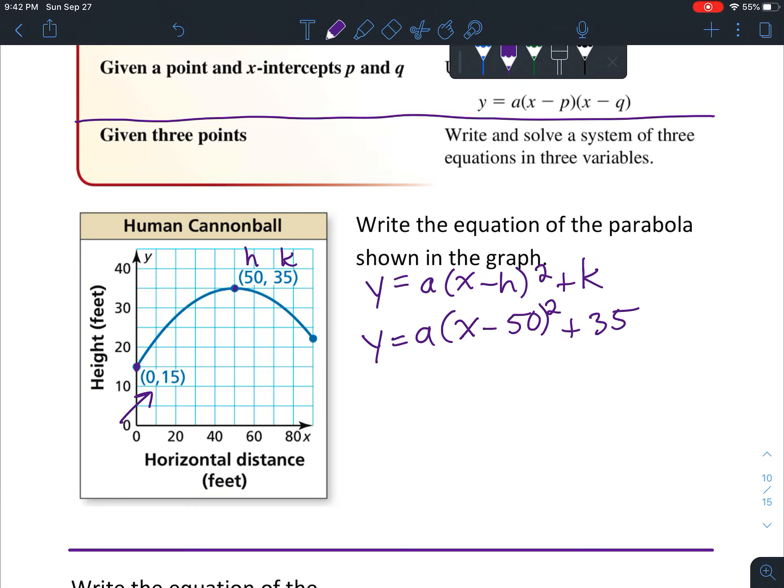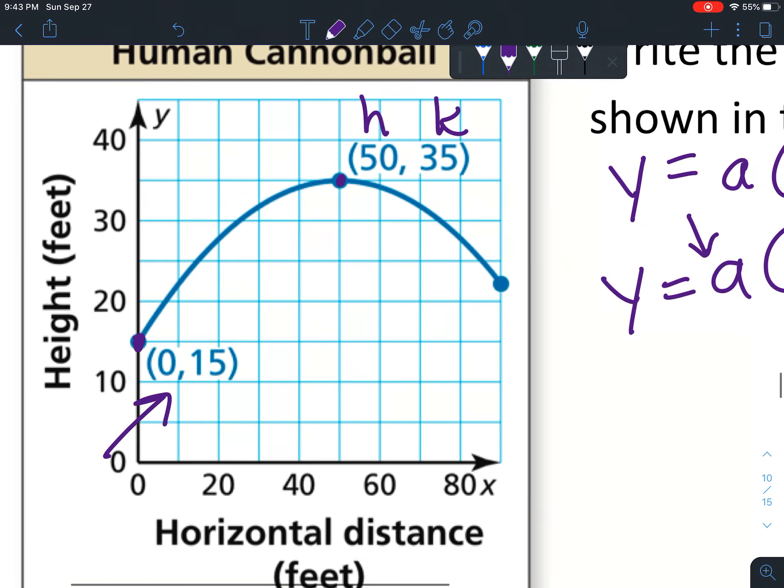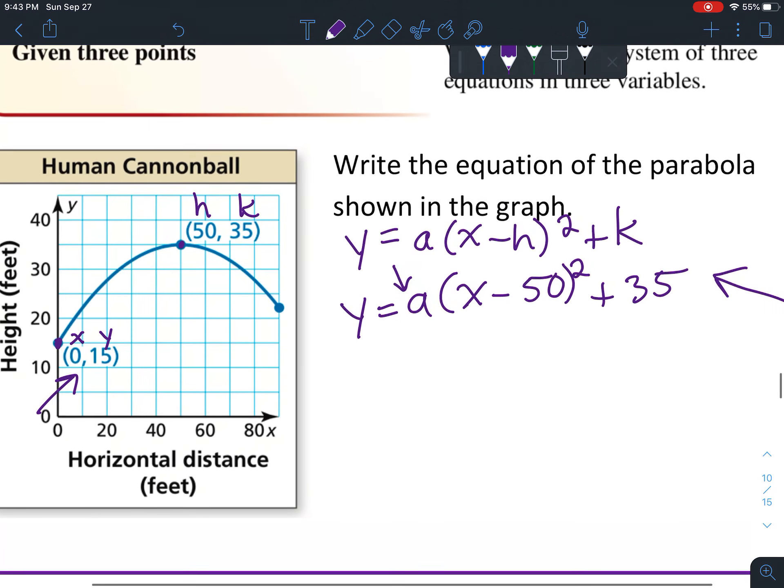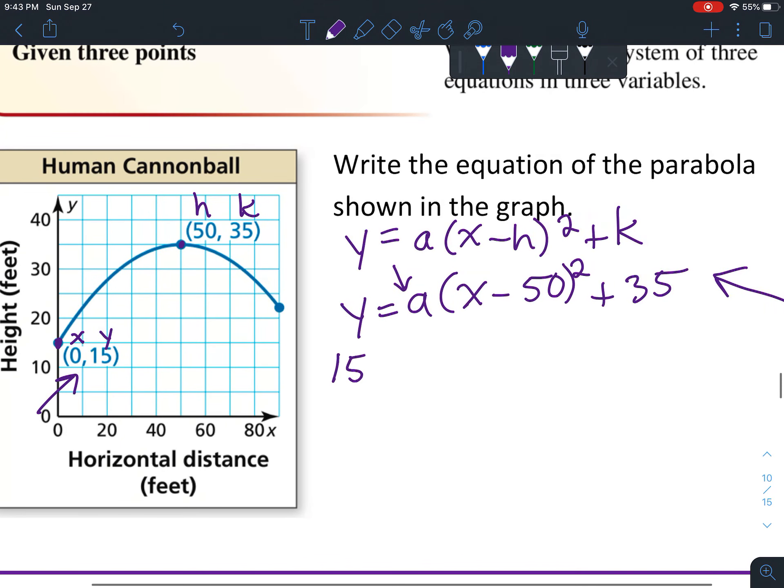This random point should work in this equation and will help us find the value of a. You're going to substitute in - keep in mind this is the x value and this is the y value. So plug those into the equation: 15 = a(0 - 50)² + 35.